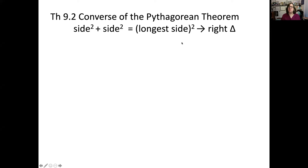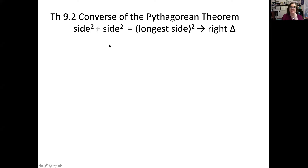I've already used this idea — the converse of the Pythagorean theorem. We can't say 'leg squared plus side squared equals hypotenuse squared' because if we don't know it's a right triangle to begin with, we wouldn't use those terms. So we'd say: if side squared plus side squared equals the longest side squared, then it's a right triangle. We can extend this to determine not only whether we have a right triangle, but whether it's acute or obtuse.